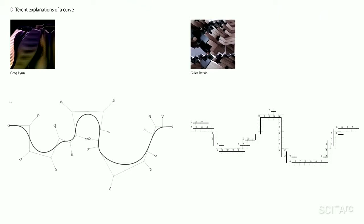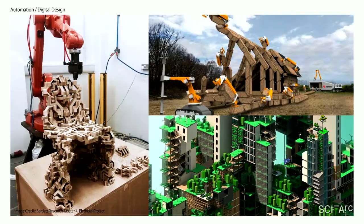Starting from Jill's digital curve: discrete architecture is a way of understanding complex forms as accumulation of generic parts. This allows parts to be assembled into complex wholes through automation, and design processes can be digitized.